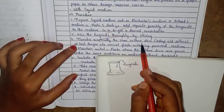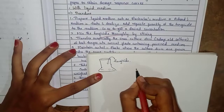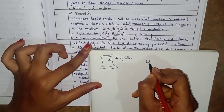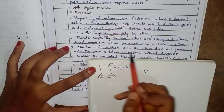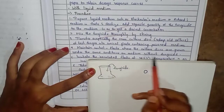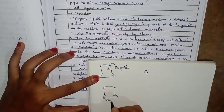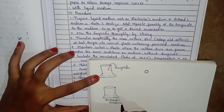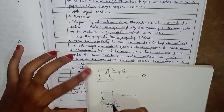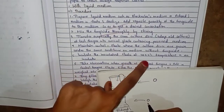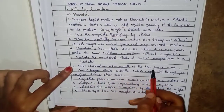Transfer a 5 mm culture disc of test fungus into conical flasks containing the poison medium. Using a cork borer, cut the disc from a petri plate and add it to the liquid medium flask. Also add a control flask where the culture discs are grown under the same conditions in medium without fungicide — using only Richard medium with the same test fungus. Incubate at 28 plus or minus 2 degrees Celsius in an incubator. Take observations when the growth of the test fungus is full in the control flask.